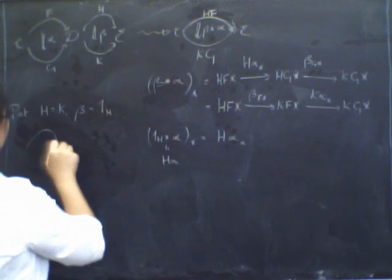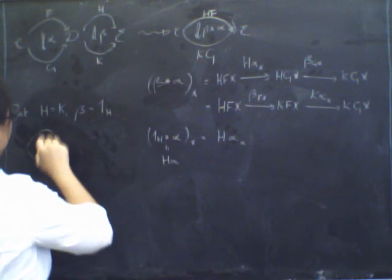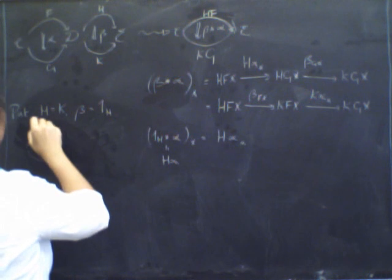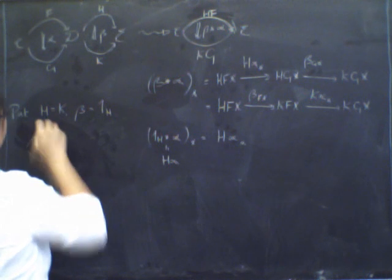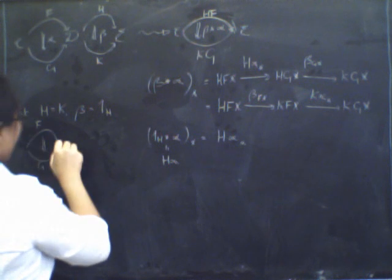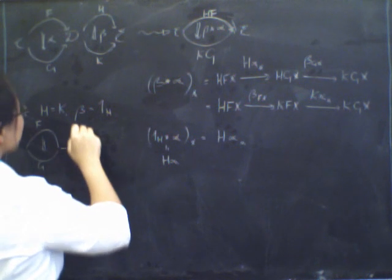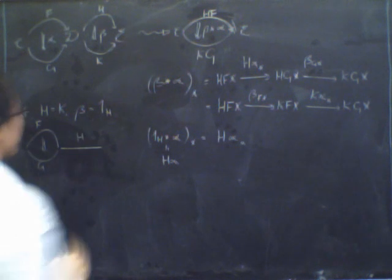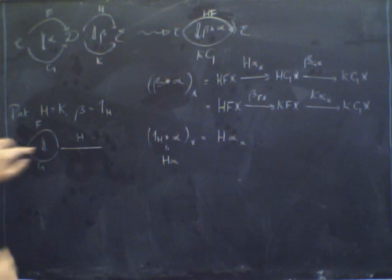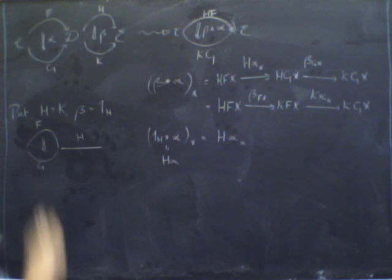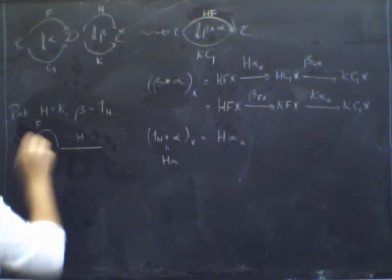Because this looks like H, it's just H of alpha. We sometimes write this natural transformation as just H alpha. And we sometimes draw it like this: alpha goes from F to G, and then it's just got a flat bit on the end, which is H.